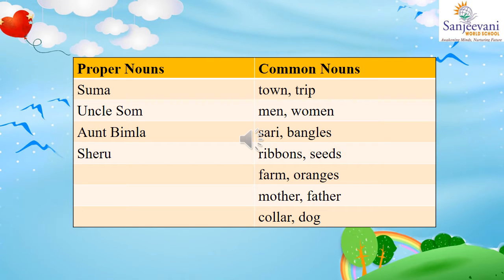Uncle Soma is the specific name of Suma's uncle, so that is a proper noun. Aunt Bimla is also the specific name of Suma's aunt — my aunt would be called differently, her name is different. Suma's aunt's name is Bimla. So again, this is a proper noun.